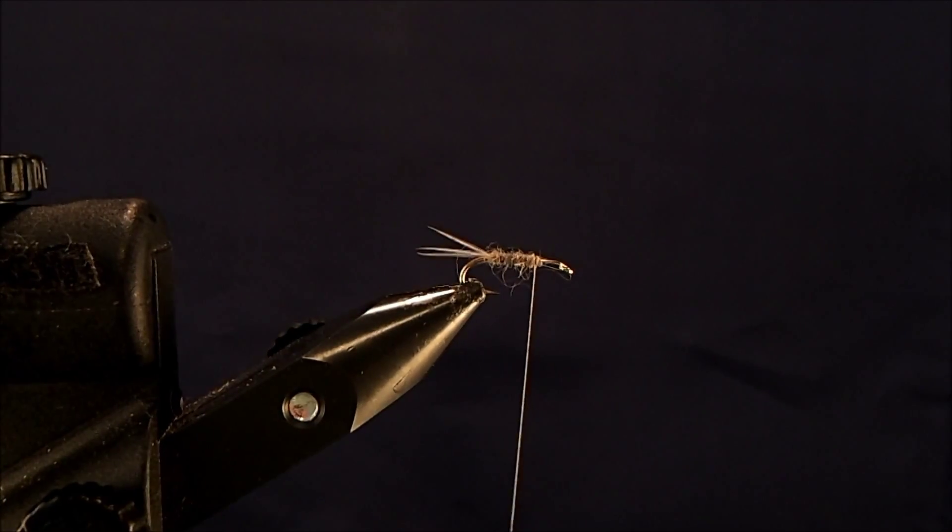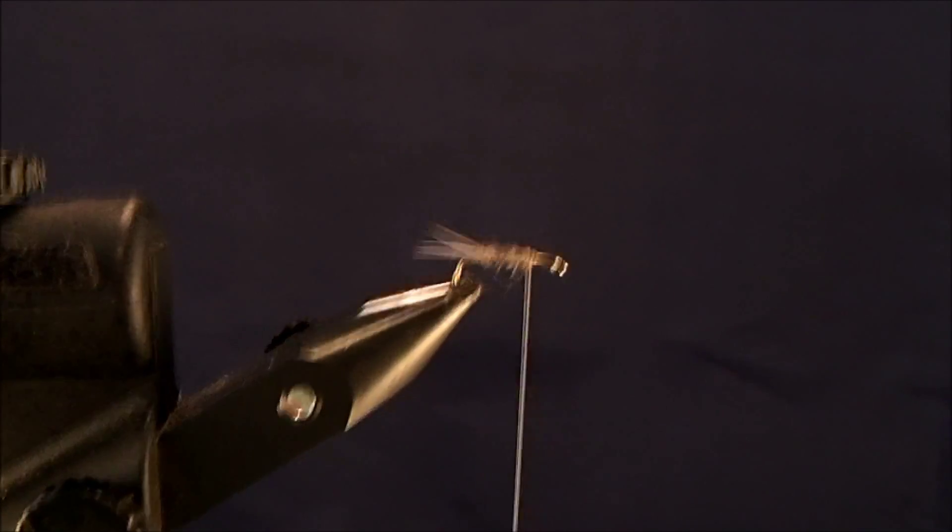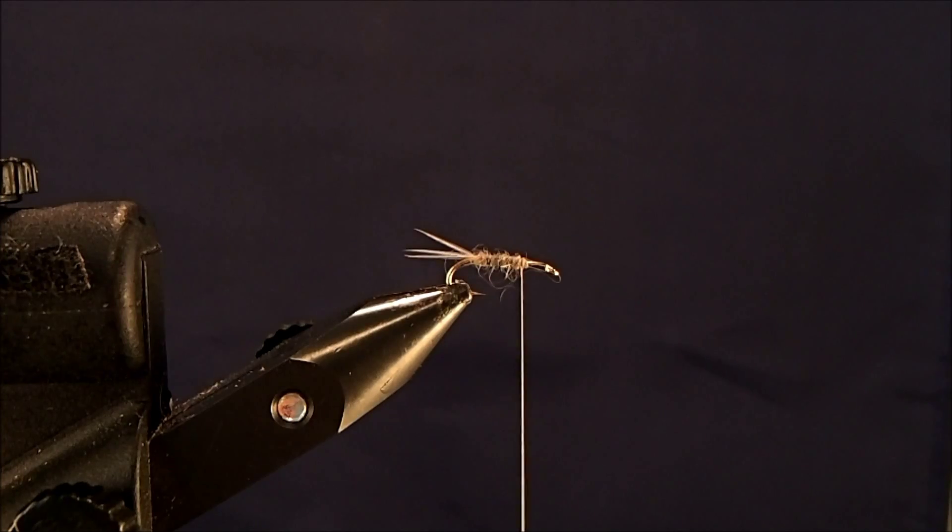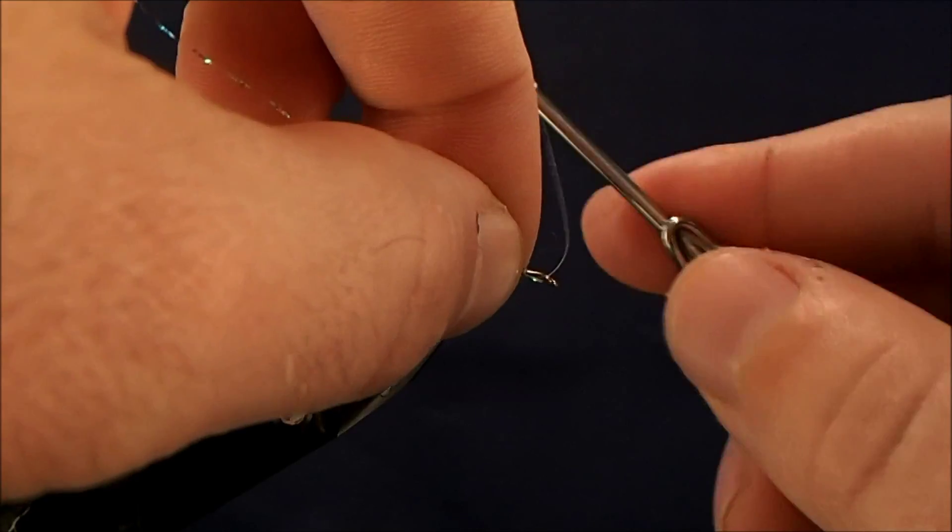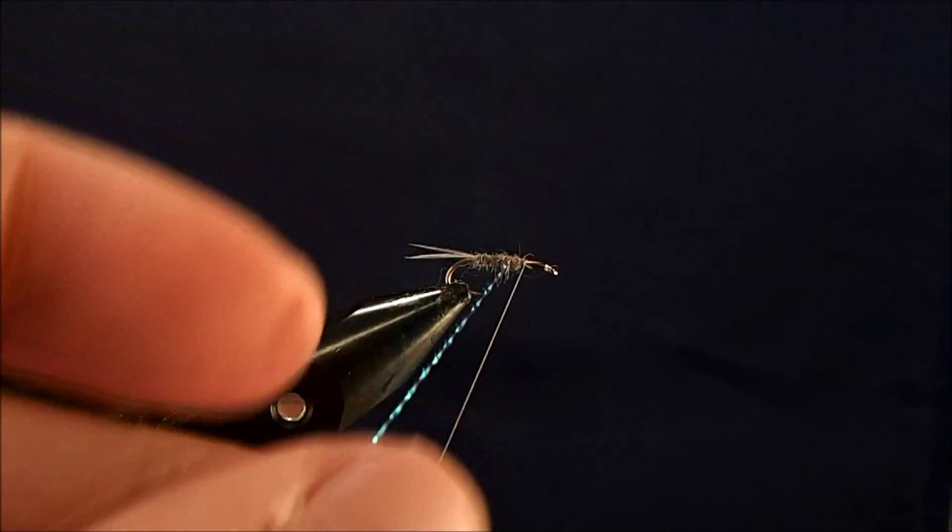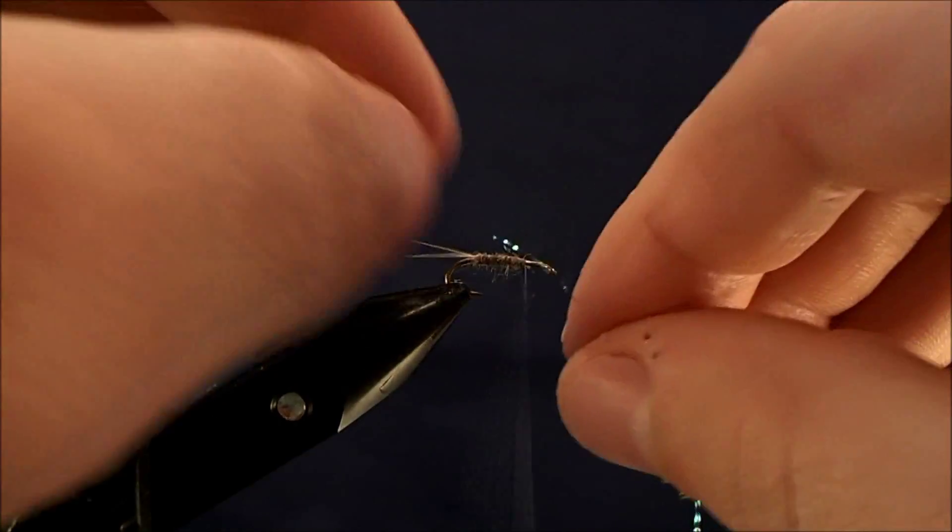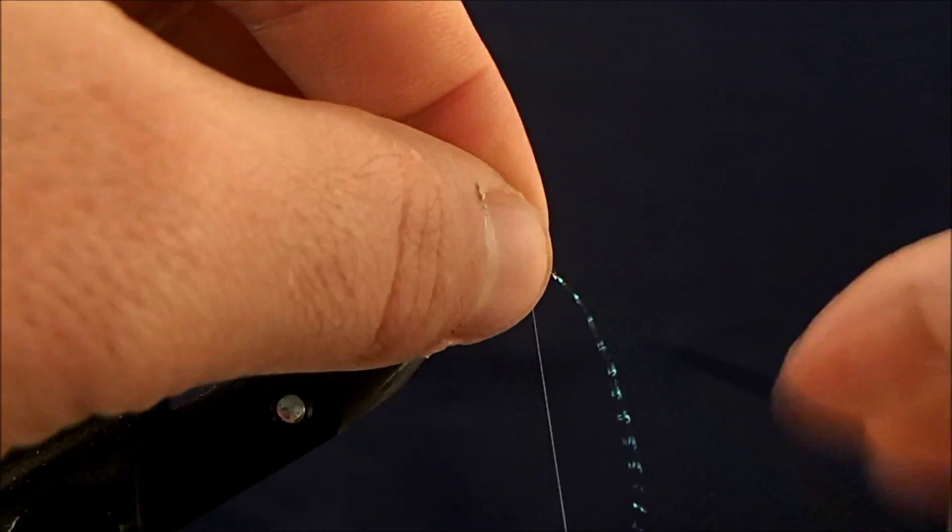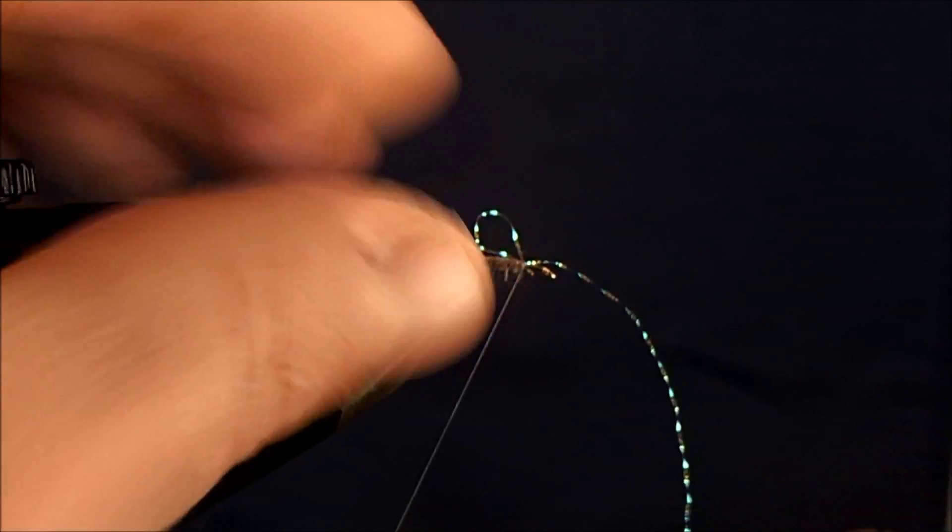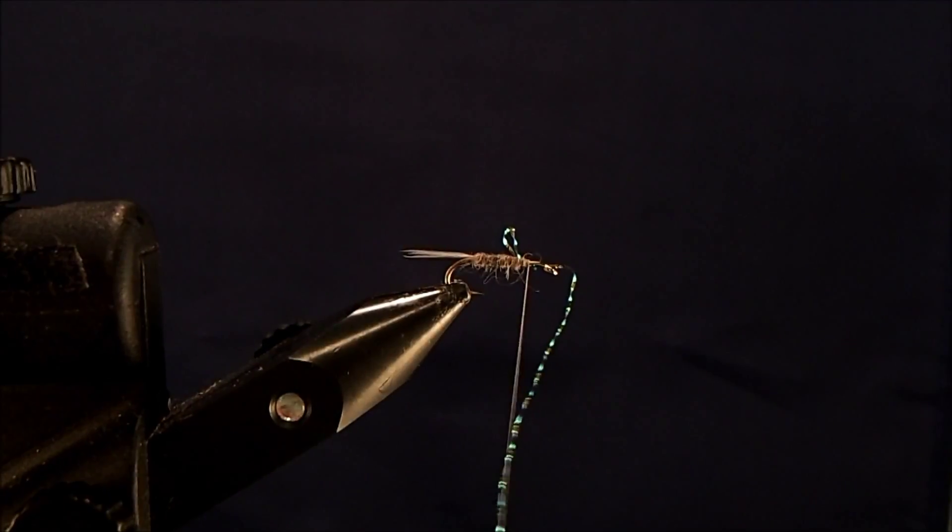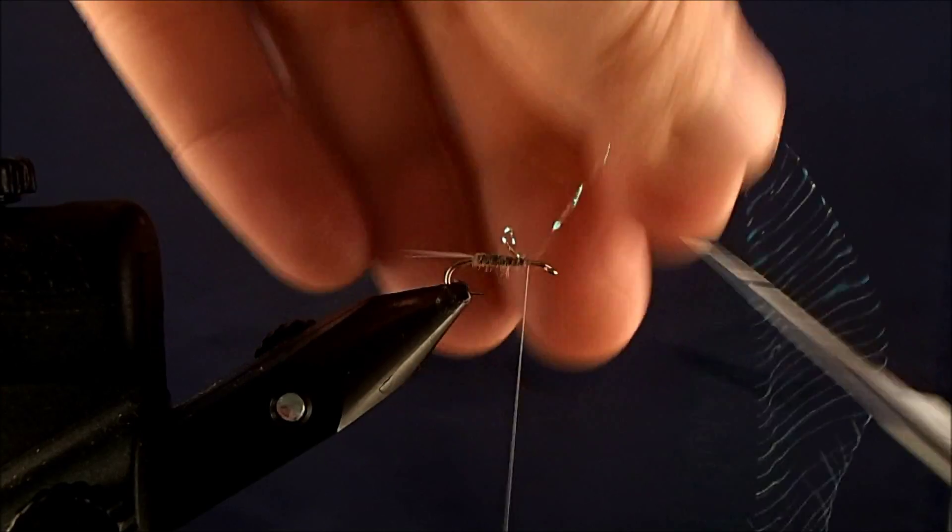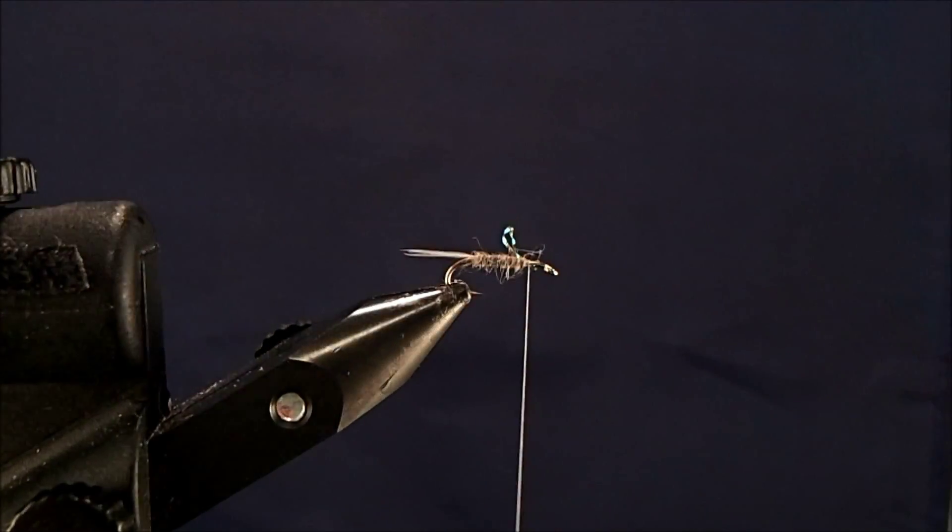Now, I always tie mine with flash. You can tie them with or without. And what I like to do is just take some of this flash material, and I'll just double it up over itself. So I'll take and tie it in. Create a little bit of a loop here. And then I can just pull that down so it creates some flash behind the wing. Trim that off.